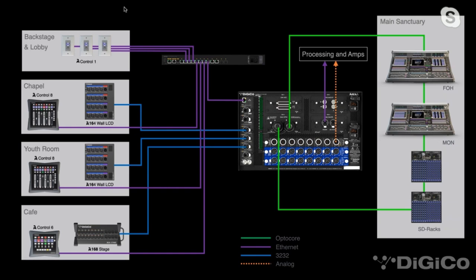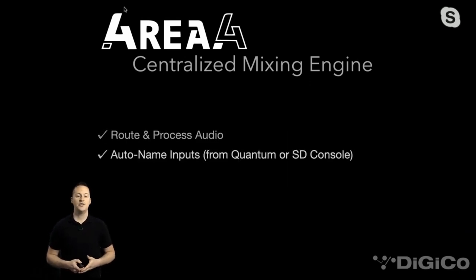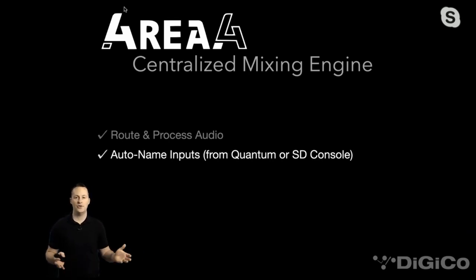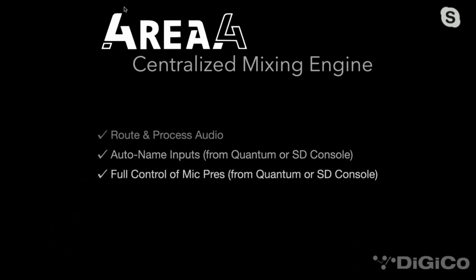We can send audio in both directions. What do you get out of integrating the Foria 4 system with Digico? First, you can route and process audio. You also get auto-naming of inputs from the Quantum or SD consoles — the name you assign will back-feed and connect through both systems, saving time. And lastly, you get full control of the mic pre's. On the Quantum console, you could turn your encoder for the mic pre and directly control the mic pre in that youth room. It's a pretty awesome feature.